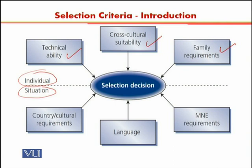When we look at the situational factors, those also affect the selection decision. Number one is country cultural requirements, which are at the macro level — what does the country require, what does the host government require, and what kind of people can be sent to that particular scenario. Another important factor is the MNE requirements — what does the multinational require and what type of skill pool they need. The third important selection decision criteria is language — whether language is a barrier or something the person can overcome easily.